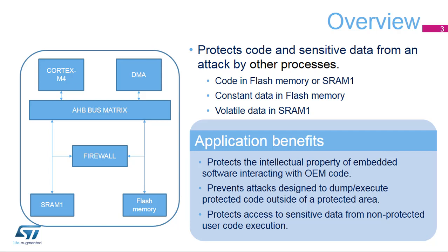The firewall protects the access to sensitive code and data located in the flash memory or SRAM1 segments from external processes. Any attack detected by the firewall causes the MCU to reset if the firewall is enabled. The firewall monitors each access from the AHB masters to the flash memory or SRAM1 AHB slaves, then, depending on the firewall configuration, allows the access to the memory segment or resets the MCU if not allowed. Having part of the code and data monitored by the firewall allows users to protect their IP, meaning a third party's intellectual property of embedded software can be protected against code dumping, along with any sensitive data stored in SRAM1.